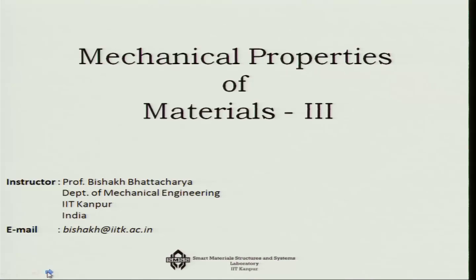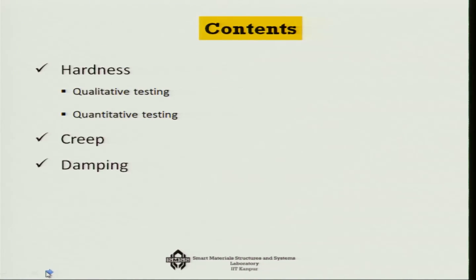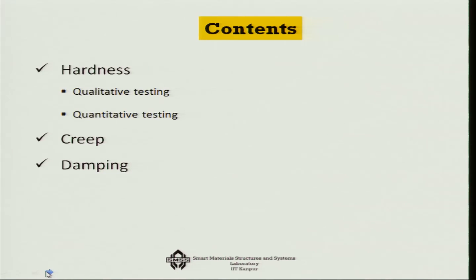In this final series on Mechanical Properties of Materials, I have chosen three very important properties: hardness, where I will explain qualitative and quantitative testing and the relationship between hardness and strength, which is very important in system design. Secondly, I will talk about creep, and finally, I will talk about damping.